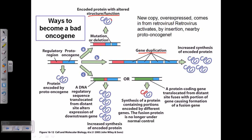The third kind is translocation — a DNA regulatory sequence translocated from a distant site that alters the expression of the gene. The proto-oncogene itself is still present as it is, but the regulatory region further upstream gets altered due to translocation. Suppose there is another regulatory region further upstream — that green regulatory part is translocated onto the existing red regulatory region. This will distort the regulatory region, leading either to increased or decreased synthesis of the encoded protein.